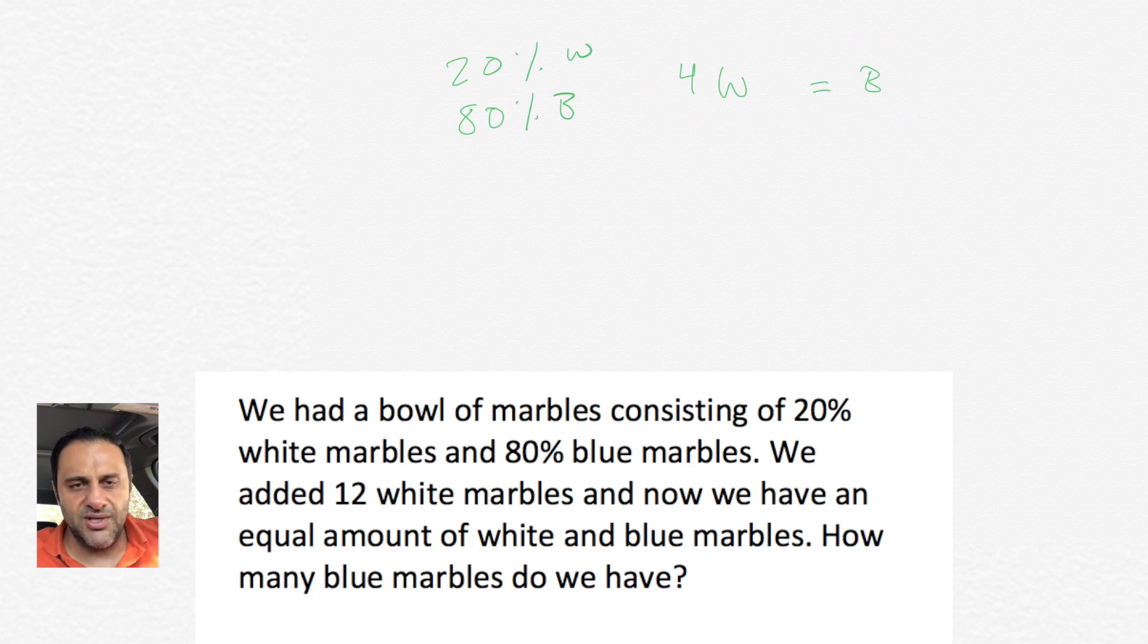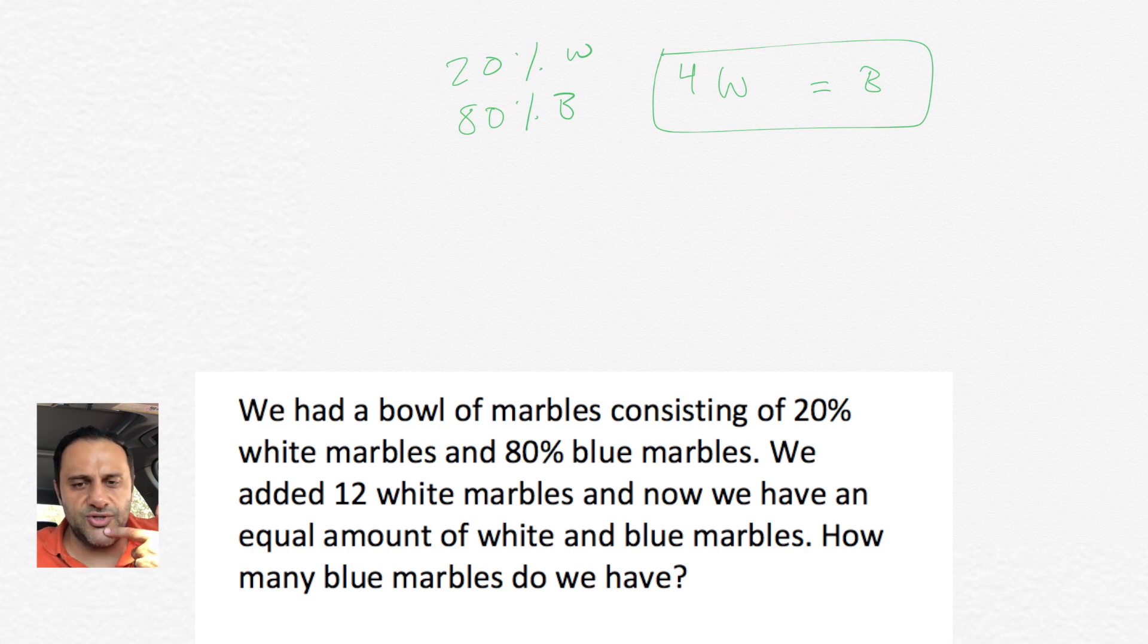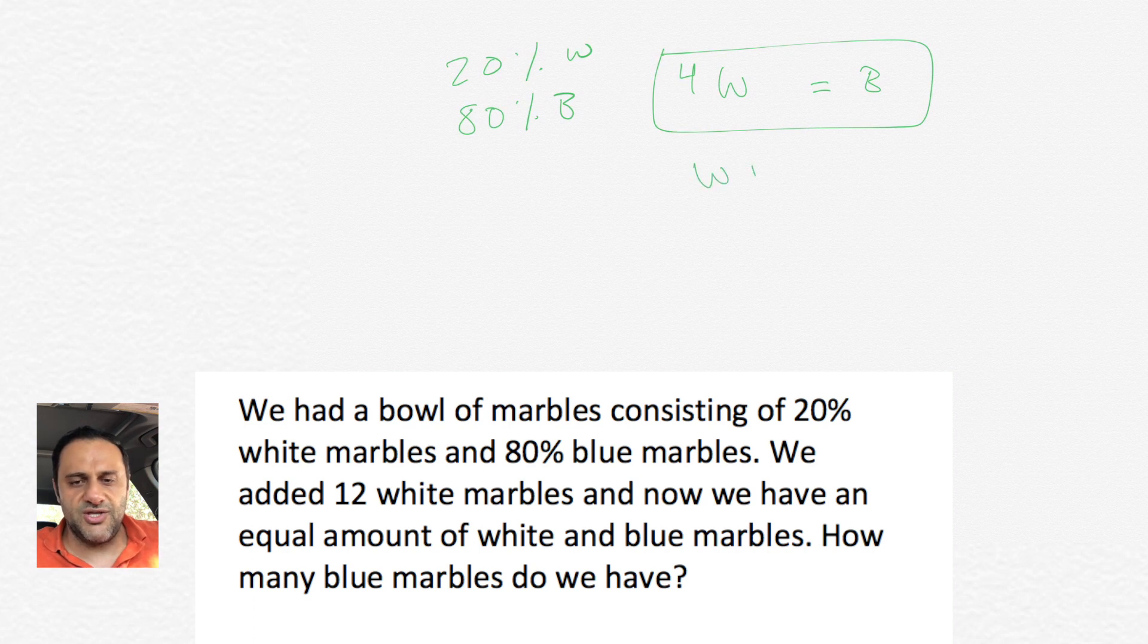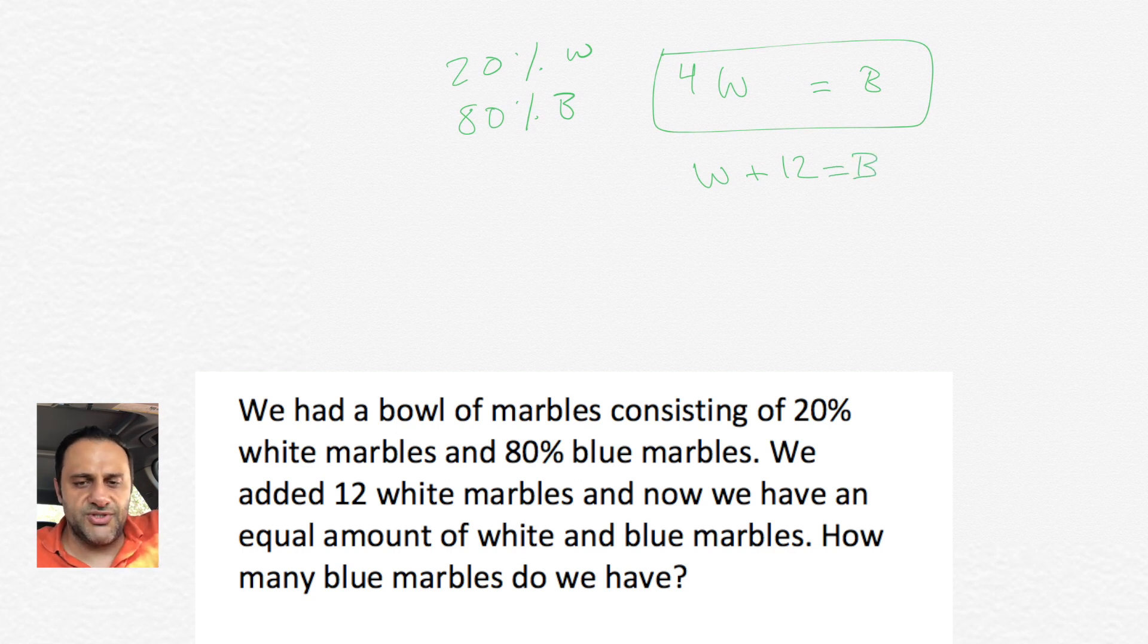Now, to put this in an equation, it would be 4 times the white marbles equals the blue marbles. Now I have a lot of students that make a mistake here, and what they do is they usually have like W equals 4 blue, because they figure that there's more blue marbles. Now that's a mistake, because there's less white marbles, so you actually have to multiply the 4 to W, not to B, so that it could equal each other. So the first equation would be 4W equals B.